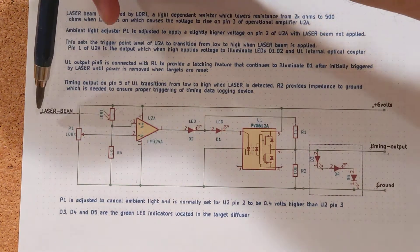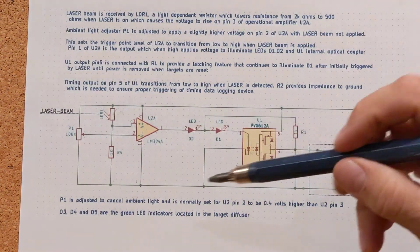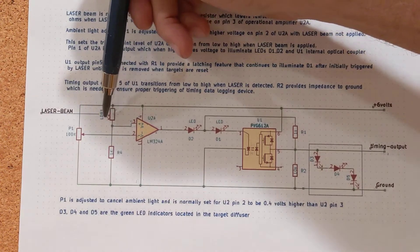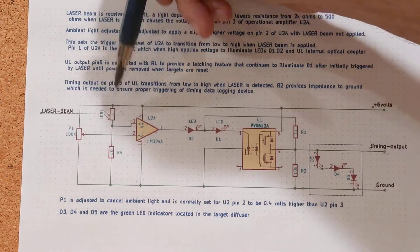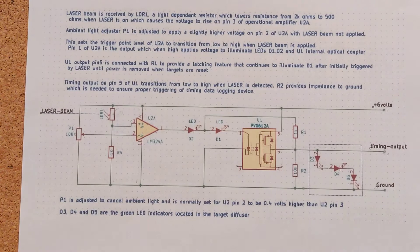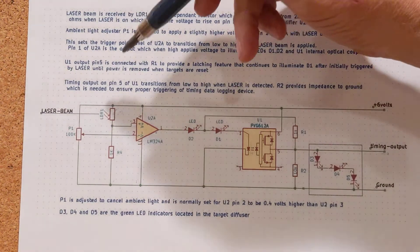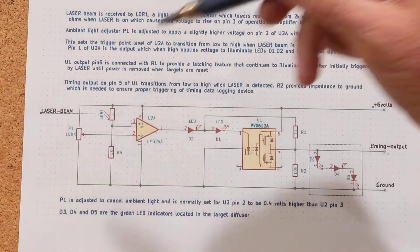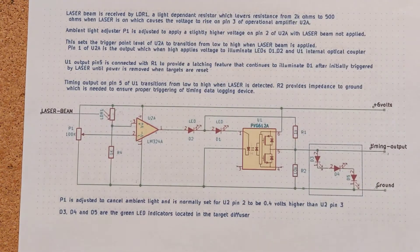This is the laser beam from the gun. The schematic shows an LDR, which is the target inside the diffuser. LDR stands for light dependent resistor. It's basically a resistor that changes in value. The one I've got here changes from about 2,000 ohms in dark condition to about 50 ohms in bright light conditions.